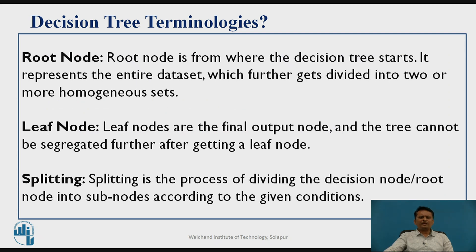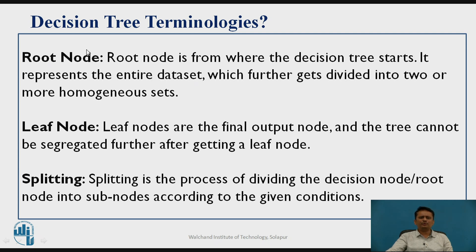When we talk about the decision tree, we want to implement it for classification purposes. Let us have a brief review of what we have in decision trees and how the implementation approach works. There are some terminologies — one is called the root node, which is the beginning node of the decision tree. Whatever dataset you have will first be made available to the root node.